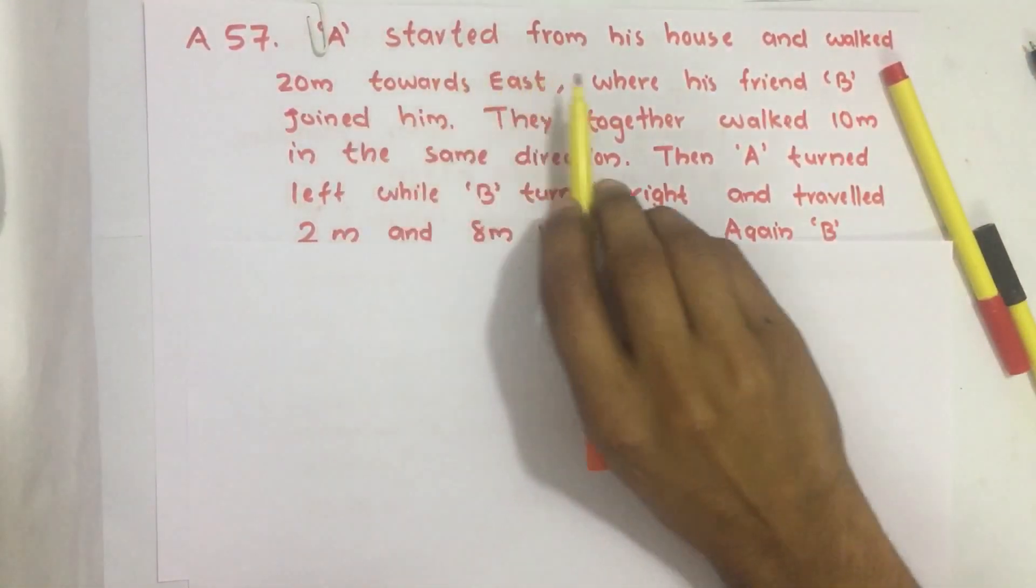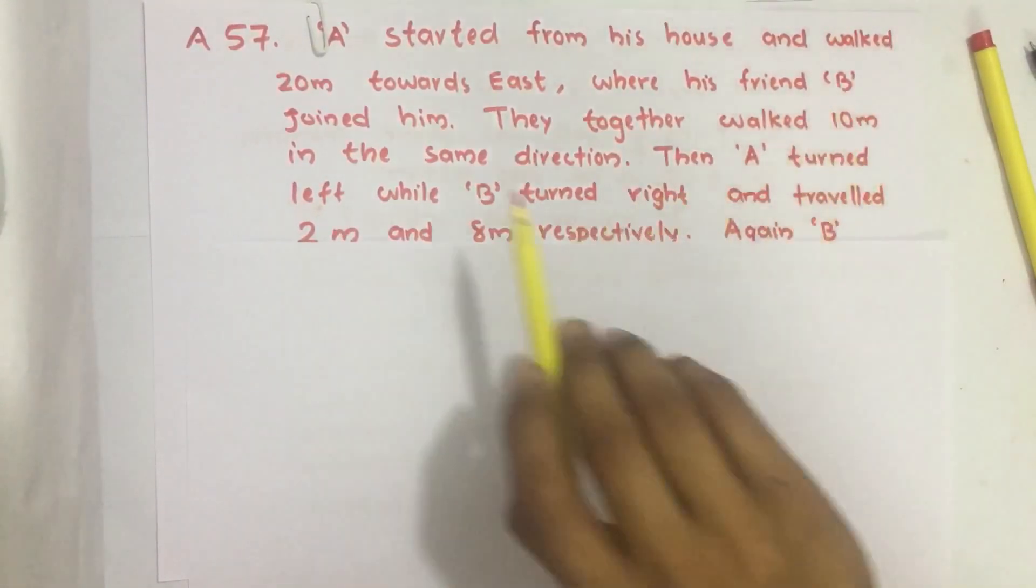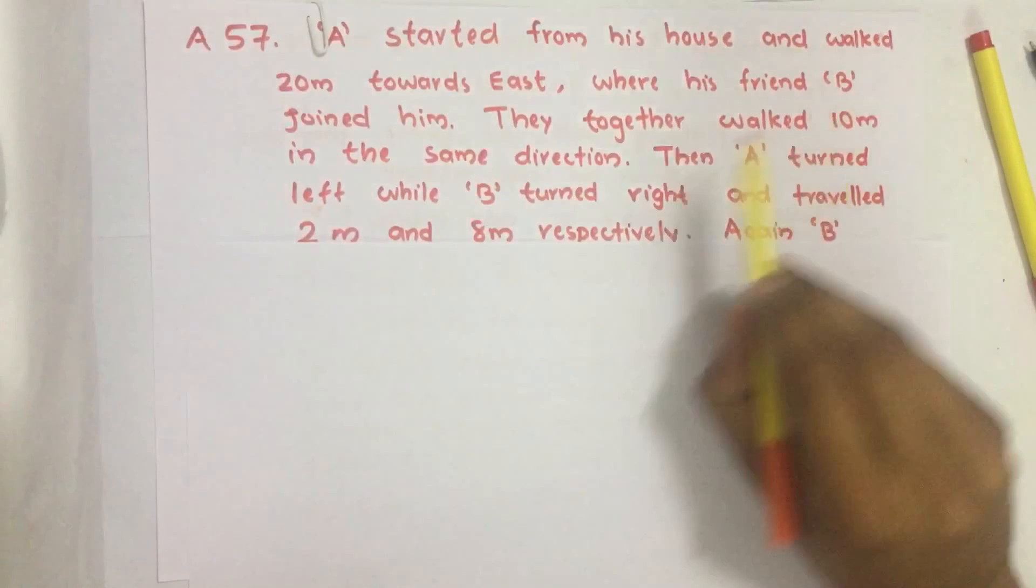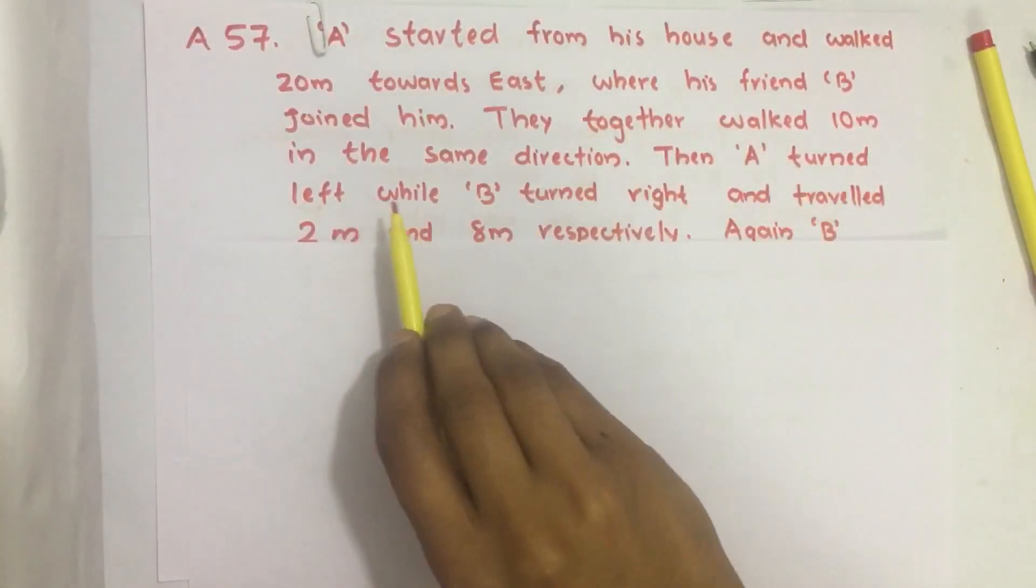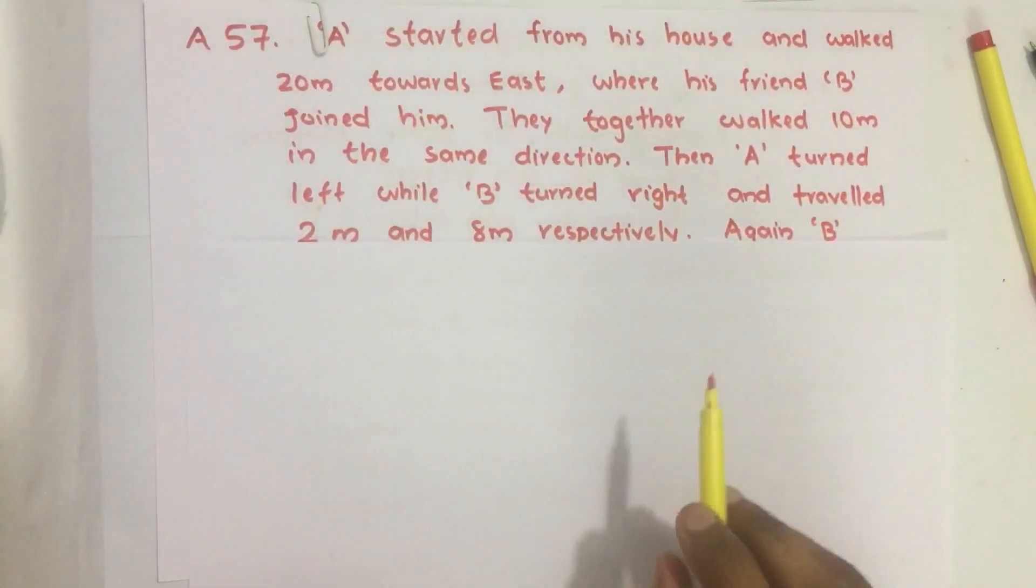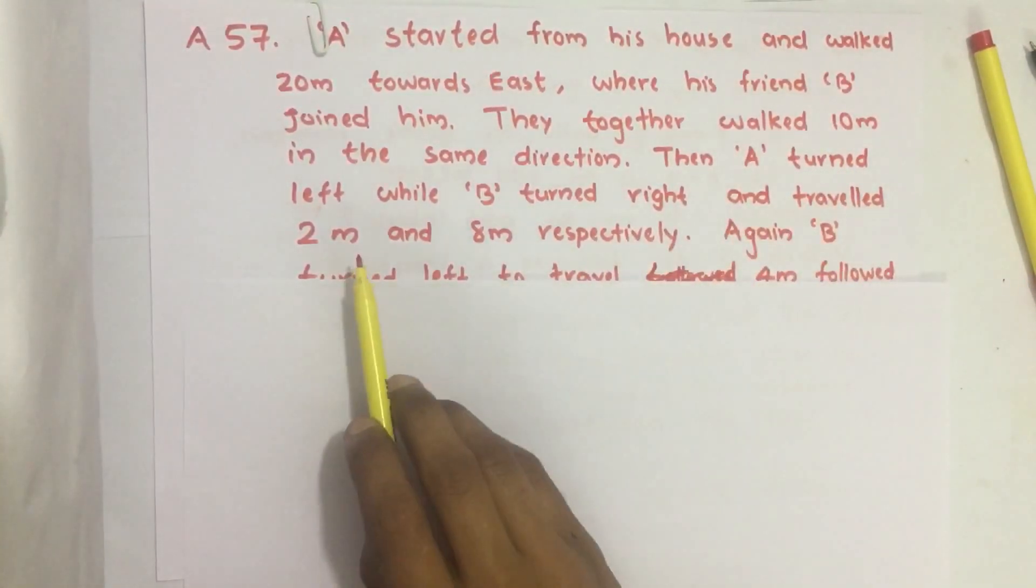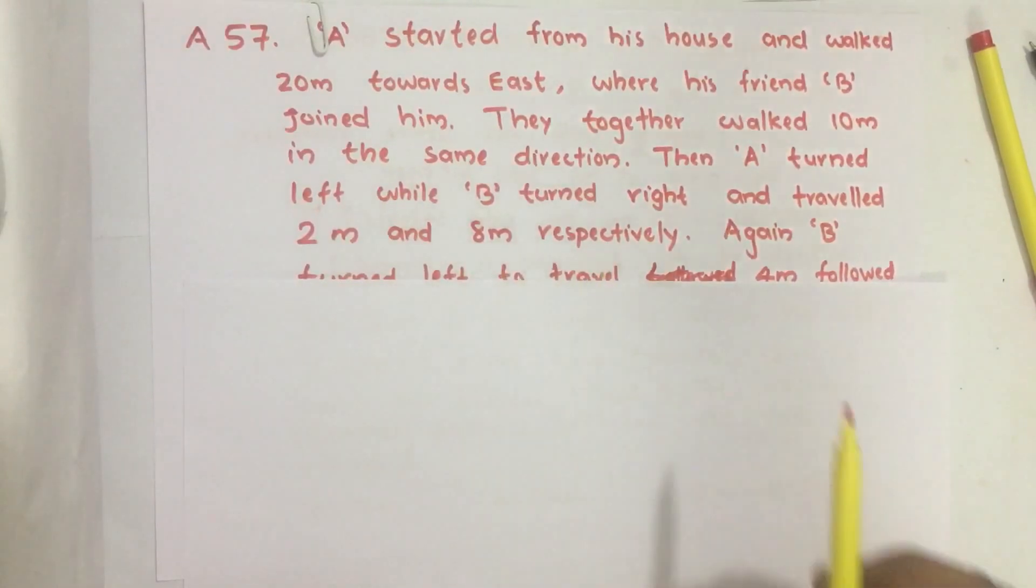A started from his house and walked 20 meters towards east where his friend B joined him. They together walked 10 meters in the same direction. Then A turned left while B turned right and traveled 2 meters and 8 meters respectively.